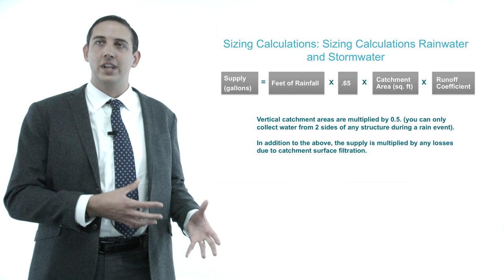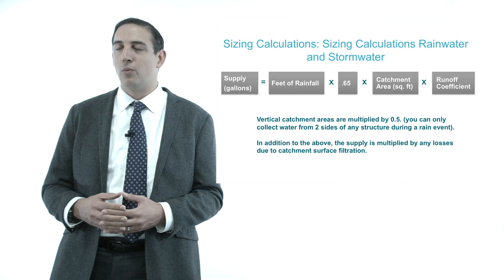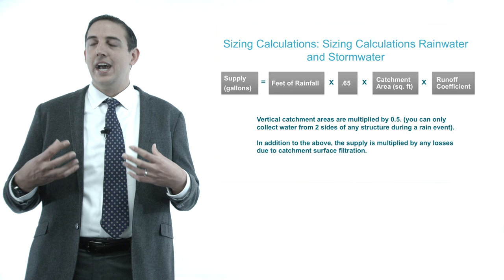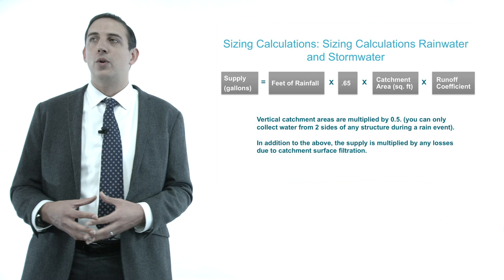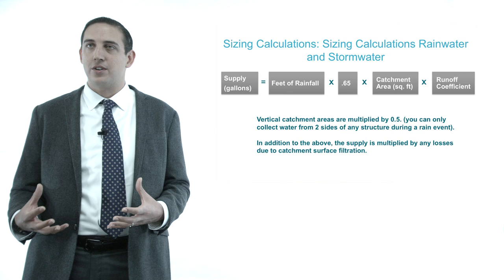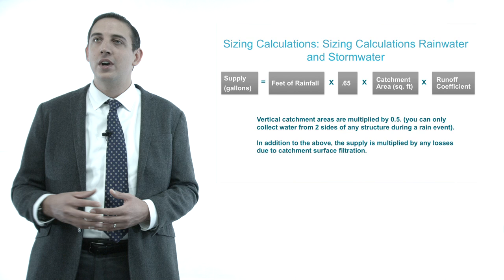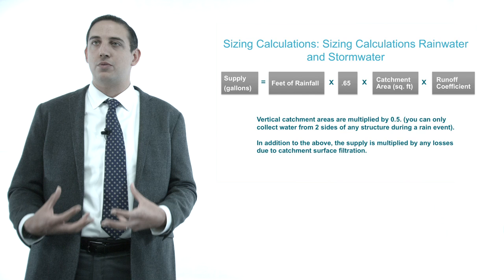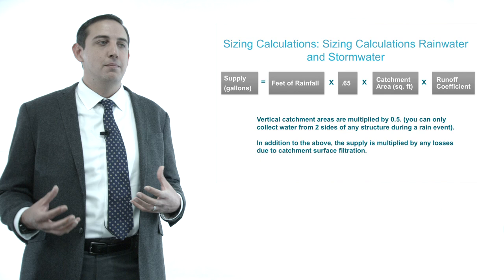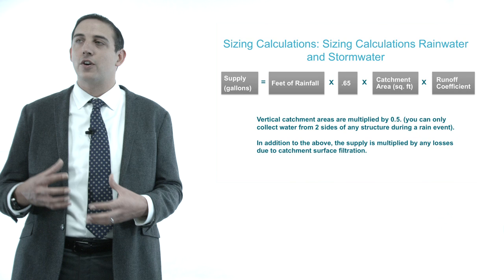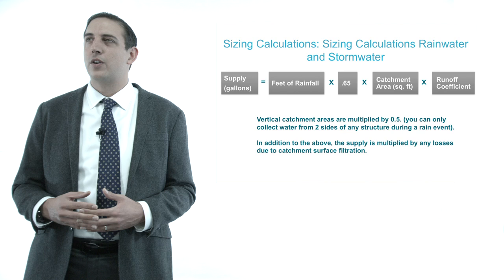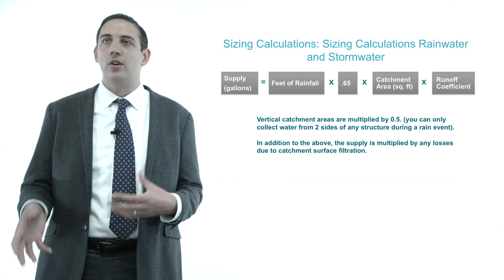The runoff coefficient comes into play during stormwater sizing. It dictates how much water you can lose based on what your surface area is. For a roof or even a parking lot, this number is generally one. If you're catching off another surface, such as a sandy beach, you would end up with a coefficient of about 0.15 because of much more drainage. It should also be noted that you can only catch rainfall off two sides of any vertical structure during any given precipitation event, so you can only account for about 50% of that overall area.